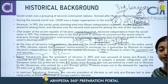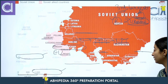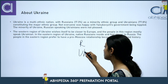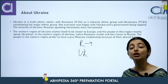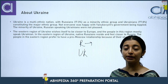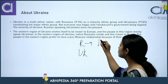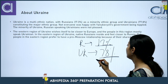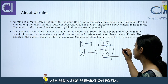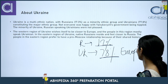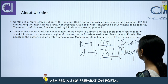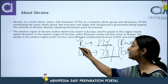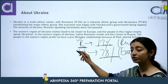Now let's look at Ukraine. Ukraine is a multi-ethnic country — there are people of Russian ethnicity as well as Ukrainians. Those of Russian ethnicity feel closer to Russia due to their historical and ethnic ties, and they make up around seventeen percent of the population. Ukrainians are seventy-eight percent — the ethnic majority — and their general inclination is towards Europe.